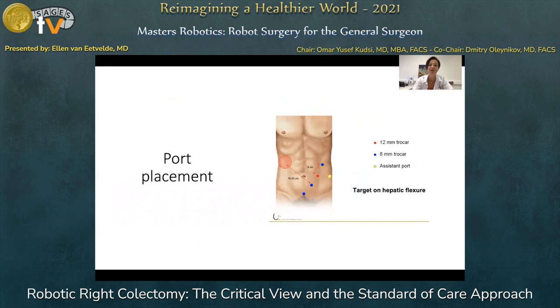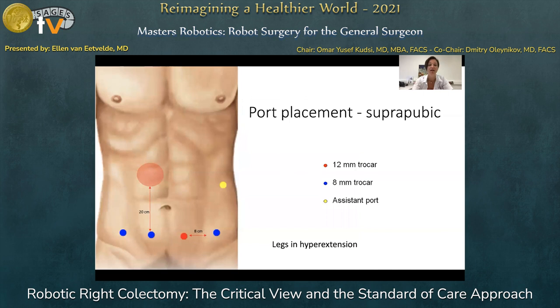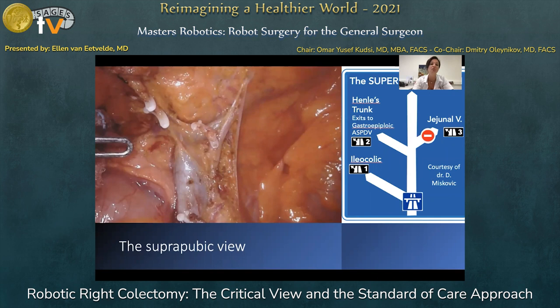Next step for variation is variations in port placement. Once you are used to the diagonal approach, you can switch to the suprapubic port placement as shown here. We keep the camera port in port number two and the stapler trocar in port number three. If the patients are very slim, the most lateral ports can be placed a couple of centimeters more towards the head of the patient, giving a sort of smiley configuration. The suprapubic port placement gives a view like a motorway where the superior mesenteric vein is the main road and all contributing branches to be identified are like exits on this motorway.